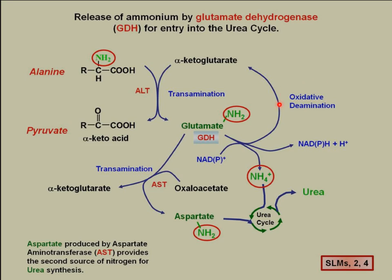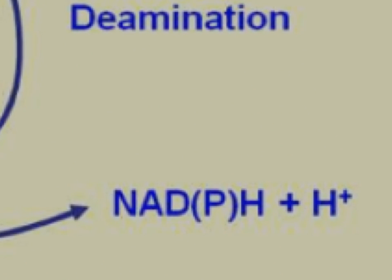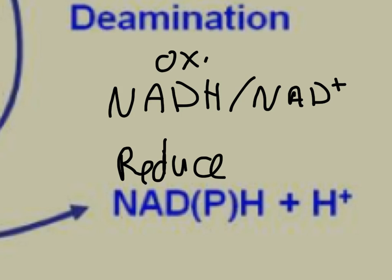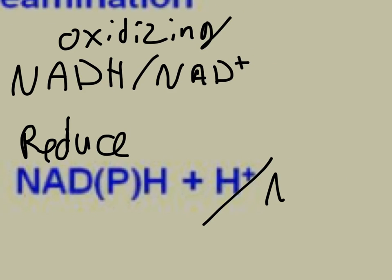Note that in oxidative deamination you actually form NADPH. As a side note, in the cell NADPH is primarily used for reduction — to reduce things. And NAD/NADH is used for oxidizing. So that's the main difference: NADP/NADPH is used for reducing.